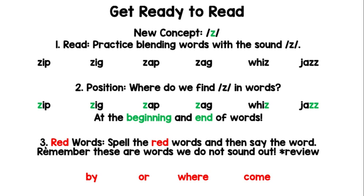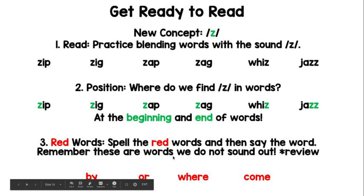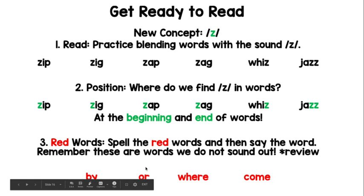Number three, red words. Spell the red words and then say the word. Remember, these are words we do not sound out. The first word is 'by' — B-Y spells by. The next word is 'or' — O-R spells or.